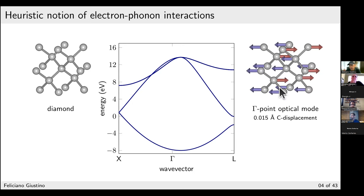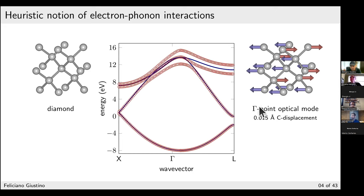Now imagine moving the atoms according to one of the optical modes of diamond — specifically a long-wavelength optical mode at the gamma point, where nearest-neighbor carbon atoms move in opposite directions. Moving the atoms by about 0.015 Å — roughly the amplitude of thermal vibrations at room temperature — and recalculating the band structure shows that the bands are modified. The previously doubly degenerate band splits into two bands, the triply degenerate band splits into three, while the lowest band is largely unaffected.